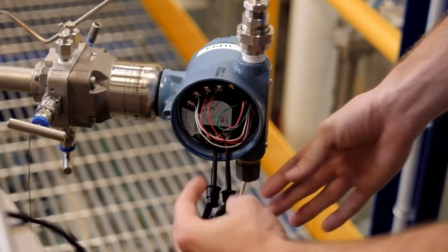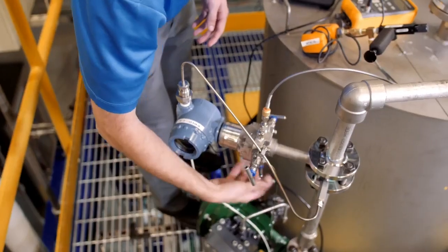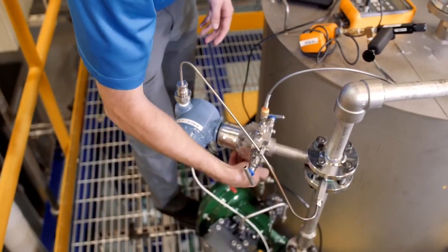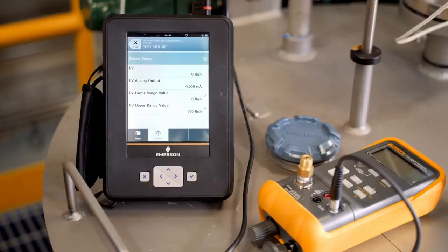The first calibration point will be a zero trim. A zero trim is a zero-based offset that provides a baseline for the measurement. For this reason, the equalized valve must be manipulated so that the high and low sides of the transmitter are experiencing equal pressure, or zero DP.